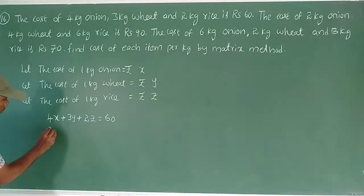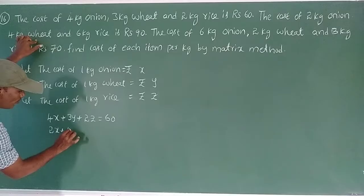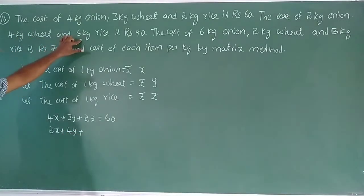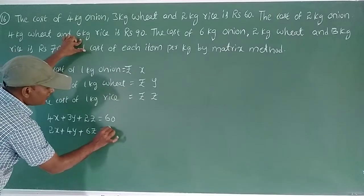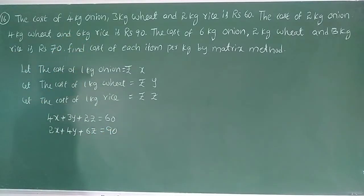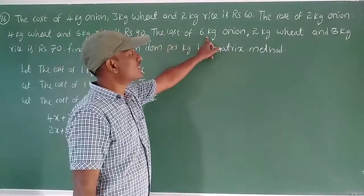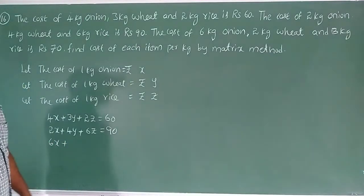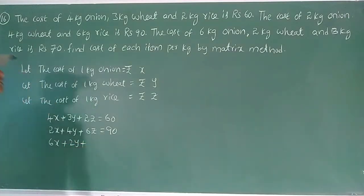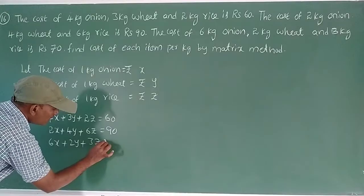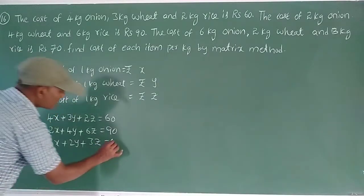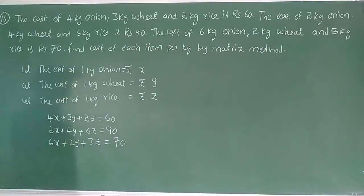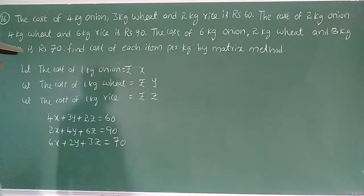Second equation: 2X + 4Y + 6Z = 90 rupees. Third equation: 6X + 2Y + 3Z = 70 rupees.